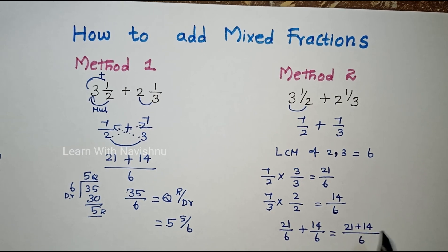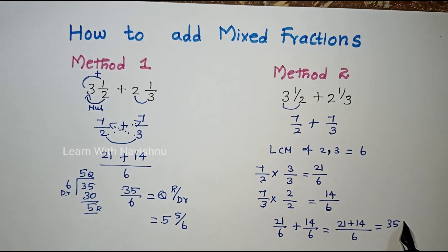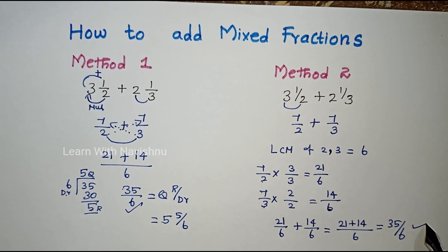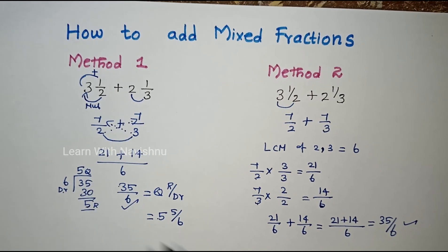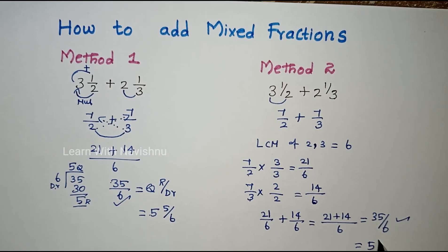With a common base, we add the numerators. 21 plus 14 equals 35 over 6. We will convert 35/6 to mixed fraction, which gives the same answer as Method 1.